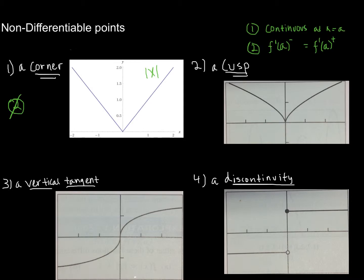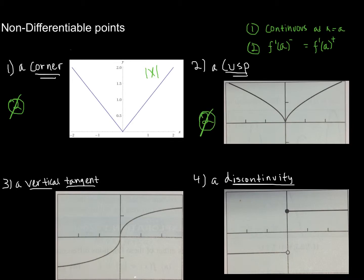Number two is what's called a cusp point. Again, is it continuous? Yes — the function as we approach from the left and from the right is getting closer to zero. But what about the derivatives? If you zoom in and look closely, this appears to be dropping straight down. Computing the derivative as you approach from the left, you'd see it's approaching negative infinity — almost perfectly vertical downwards. As you approach from the right, it's approaching positive infinity — perfectly straight upwards. So the derivatives do not exist: the slope from the left is negative infinity and from the right is positive infinity.